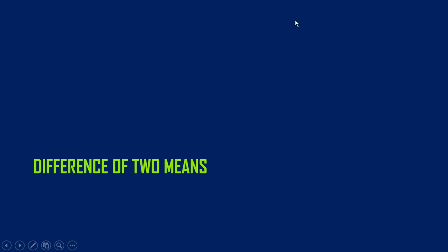Before we go any further, we should talk about how to test or check the conditions for t-tests. This applies to t-tests and also to z-tests, but I'm just going to keep talking about t-tests, because that's all we're really going to do, except for proportions where we use z in a slightly different context. But it's t-tests all the way down here.